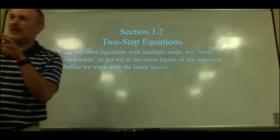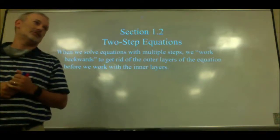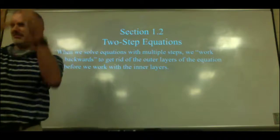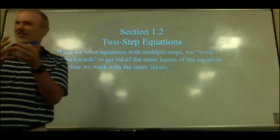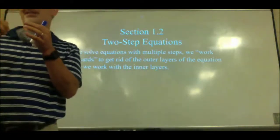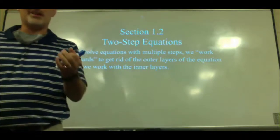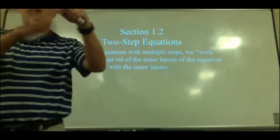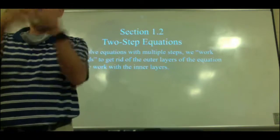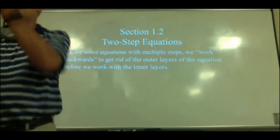There are layers to equations. Think of corn on the cob — it comes wrapped in the husk. Before you can cut the corn off the cob, you've got to take off the outer husk first. Then once the outer husk is off, you can slice the corn off the cob. So you've got to get rid of the outside first before you can get to the inside. Even though it's two steps: outside first, then inside.